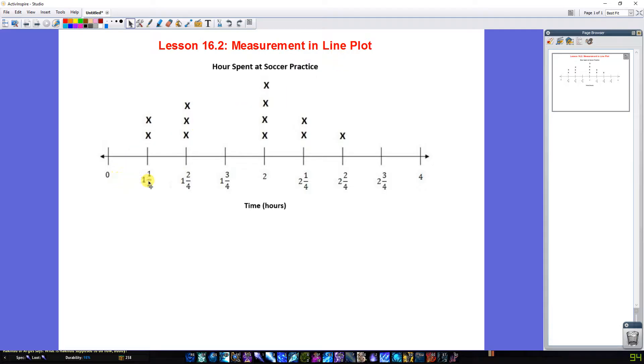So a line plot was just 1, 2, 3, 4, 5, 6, 7, whole numbers on a number line.